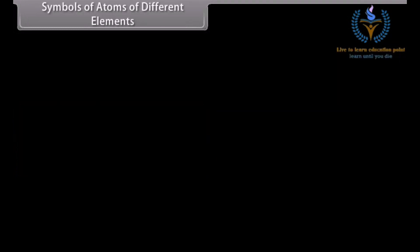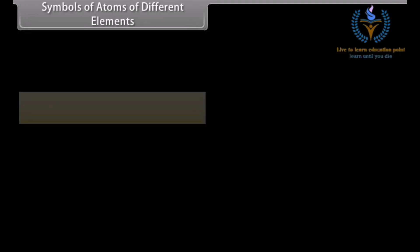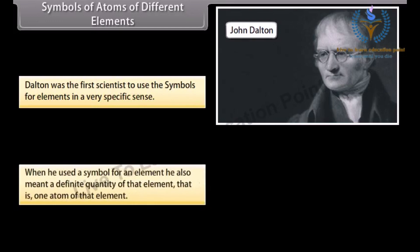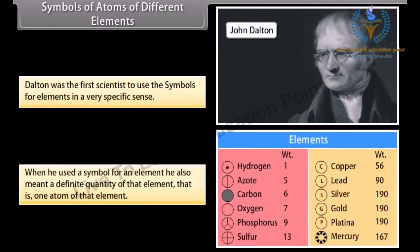Dalton was the first scientist to use the symbols for elements in a very specific sense. When he used a symbol for an element, he also meant a definite quantity of that element, that is one atom of that element.